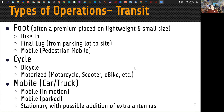One of the things that determines the type of operation is how you get there — the transit aspect. Are you going on foot? When going on foot, there's often a premium placed on lightweight and small size, especially if you're hiking in. But sometimes foot travel only involves the final lug from the parking lot to the site. If you're hiking for multiple days to reach a location, that's very different. You might also be operating while moving on foot — that's pedestrian mobile.